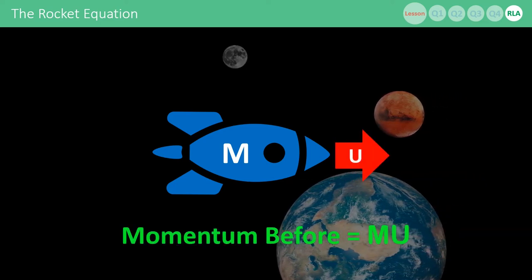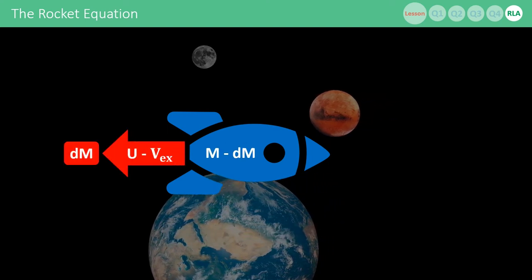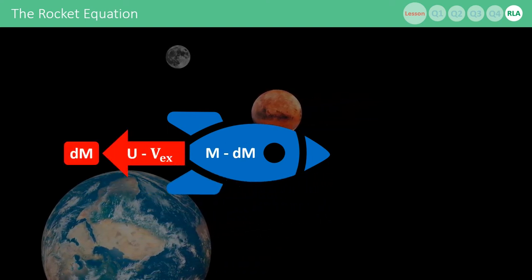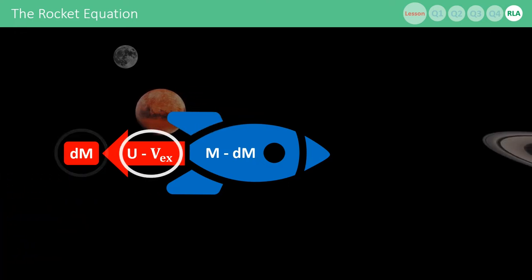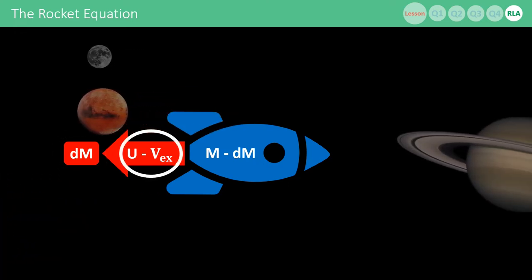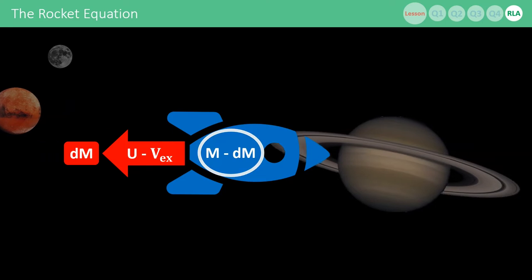But imagine that this rocket very briefly turns on its engines. It releases a very small amount of propellant with mass dm. The velocity of that propellant is the ship's velocity minus the exhaust velocity. Because the ship has released some propellant, its total mass is now m minus dm.